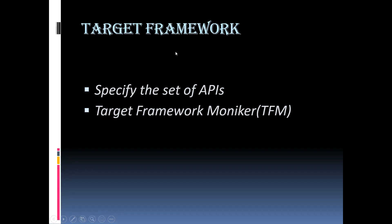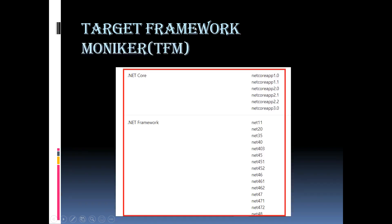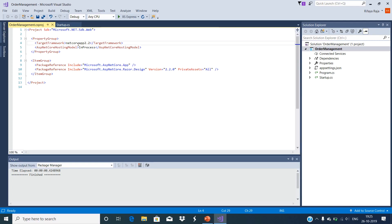When you target a framework in an app or library, you are specifying the set of APIs you'd like to make available. You specify the target framework in your project file using a Target Framework Moniker (TFM) — a standardized token format for specifying the target framework of a .NET app or library. For example, .NET Framework 1.1 has TFM 'net11', and for .NET Core 2.2 SDK, the TFM is 'netcoreapp2.2'. Since we selected .NET Core 2.2 SDK, our TFM is netcoreapp2.2.